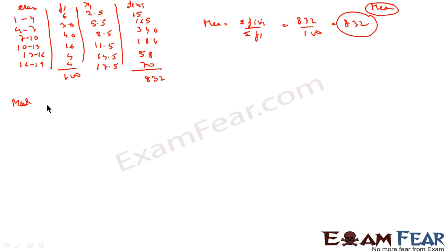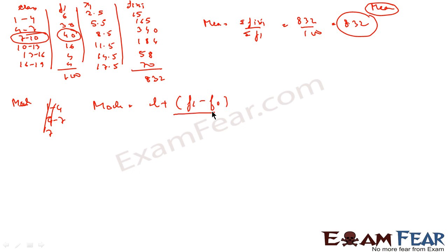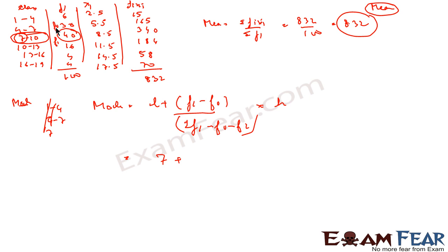For mode, from the same data, the maximum frequency is 40, which corresponds to the class 7–10. So 7–10 is the mode class. The formula for mode is: Mode = l + (f1 − f0) / (2f1 − f0 − f2) × h. Here l = 7, and f1 = 40.